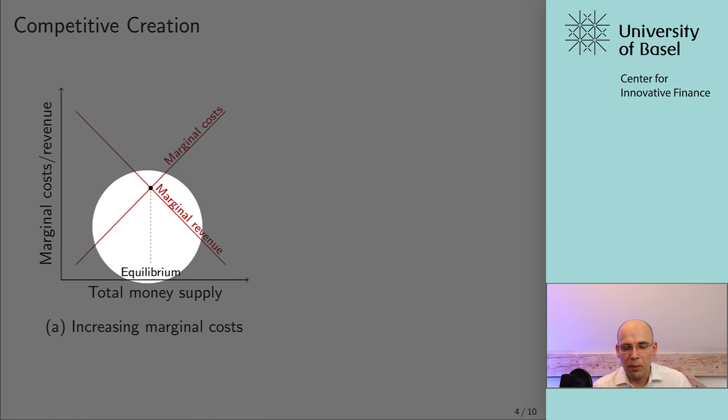There could also be situations where the marginal cost remains constant. Distancing yourself from the gold example, the marginal revenue still decreases with total money supply — the more of this monetary unit is already circulating, the lower the willingness to pay, generally speaking. So with constant marginal cost and decreasing marginal revenue, you would still end up at an equilibrium. In terms of competitive creation, there will always be a shift toward this equilibrium, and more money will be created until the economy reaches this equilibrium state.